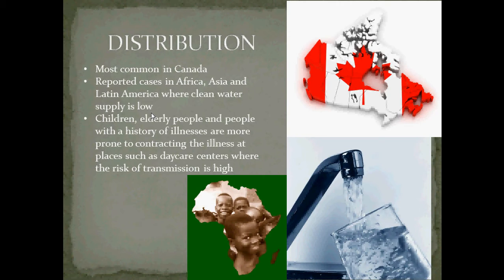Regarding distribution, Giardiasis is most common in Canada, but cases have been reported in Africa, Asia, and Latin America, where clean water supply is often low. Children, elderly people, and people with a history of illnesses are also prone to contracting Giardiasis at places such as daycares, where the risk of transmission is high.